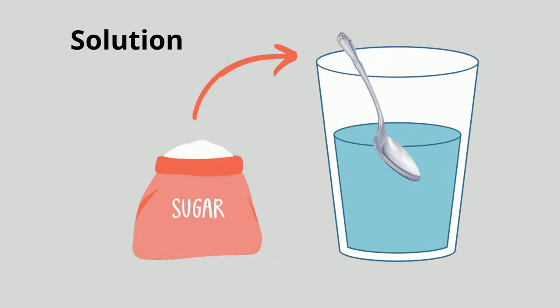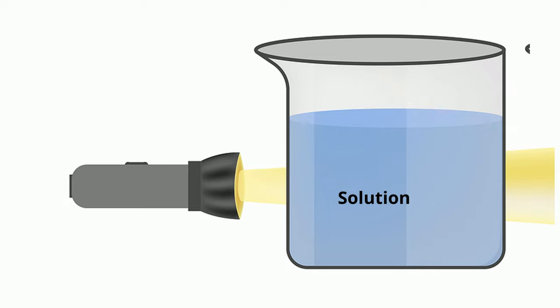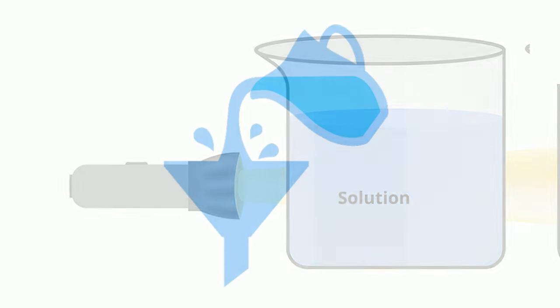A solution is a mixture of two or more substances. The particles in a solution cannot be seen. Light is not visible when it passes through a solution, and it cannot be separated using a filter.